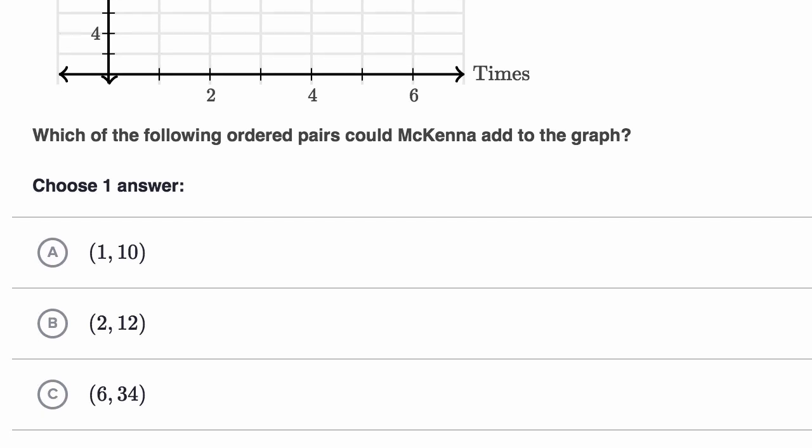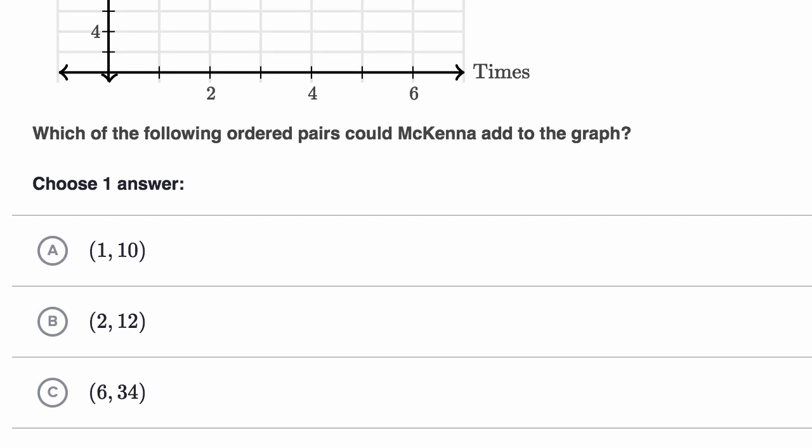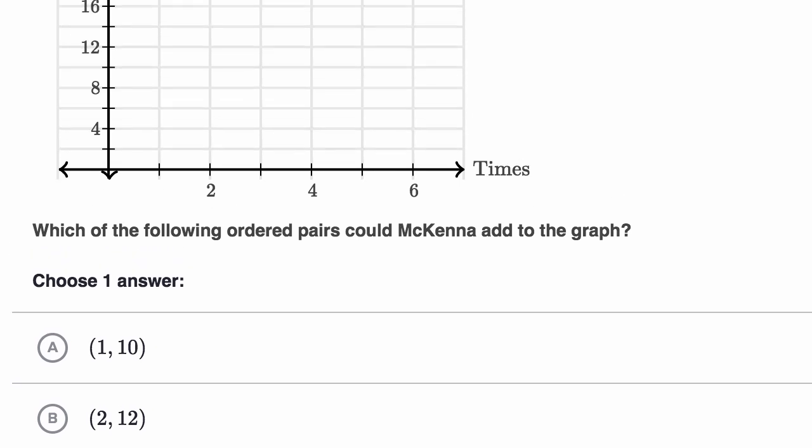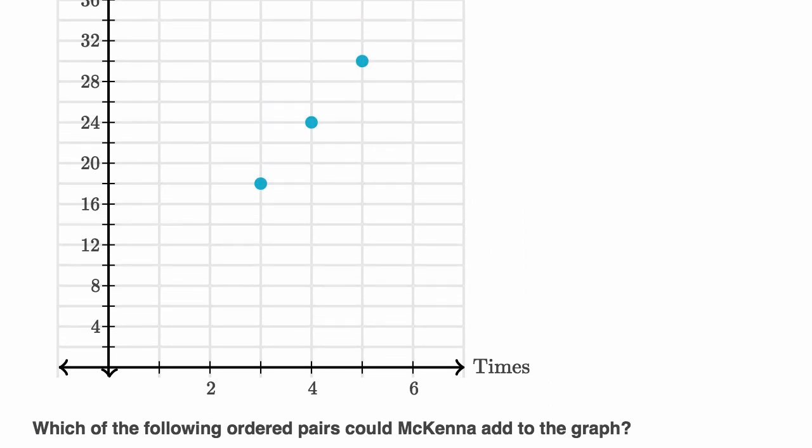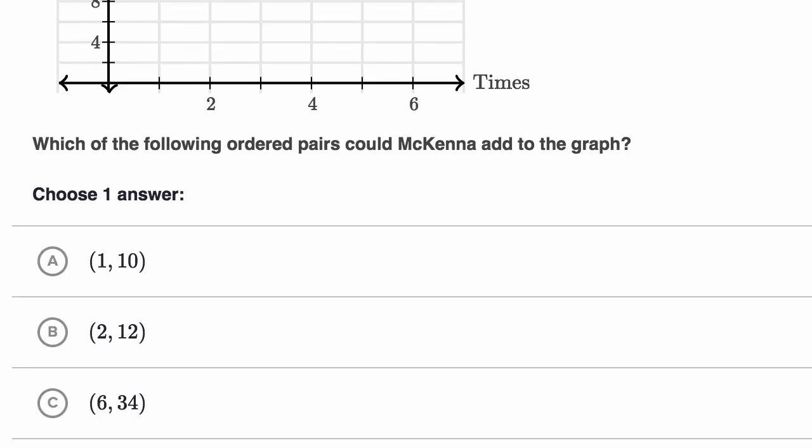So let's go down here to see what they're asking us. They say which of the following ordered pairs could McKenna add to the graph? So this would be 1 time shoveling snow, would she get $10 for it? Does she get $10 for every time she shovels snow? No, that wouldn't be consistent with the data here. She got $18 for shoveling snow 3 times, so that looks like she's getting $6 for every time she shovels snow. So I would rule out choice A.